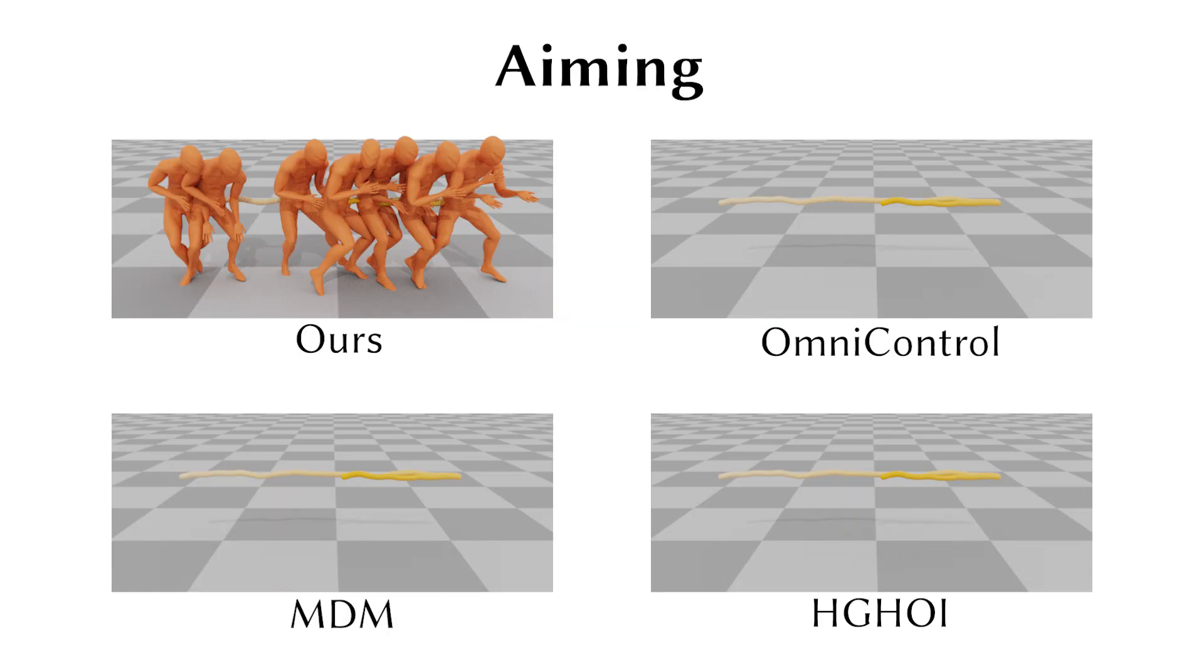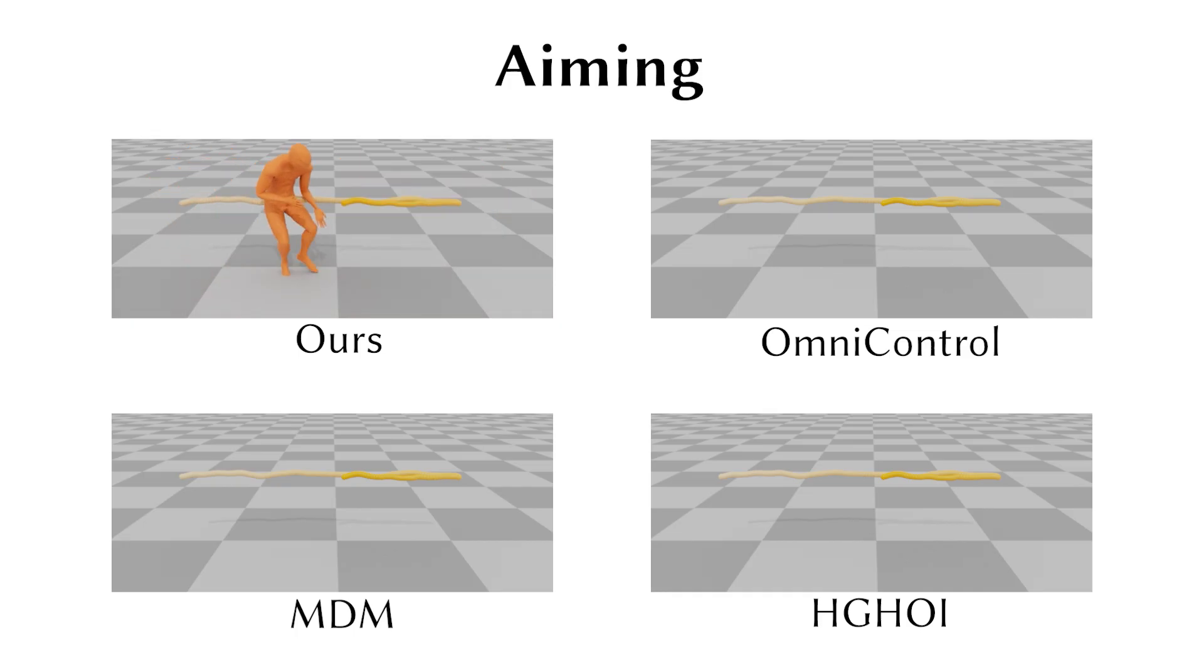We first compare the motion generation quality of our method and three baselines under dense control signals over the root joint. In this aiming action, our method generates high-quality cross-step movements with almost no foot skate.